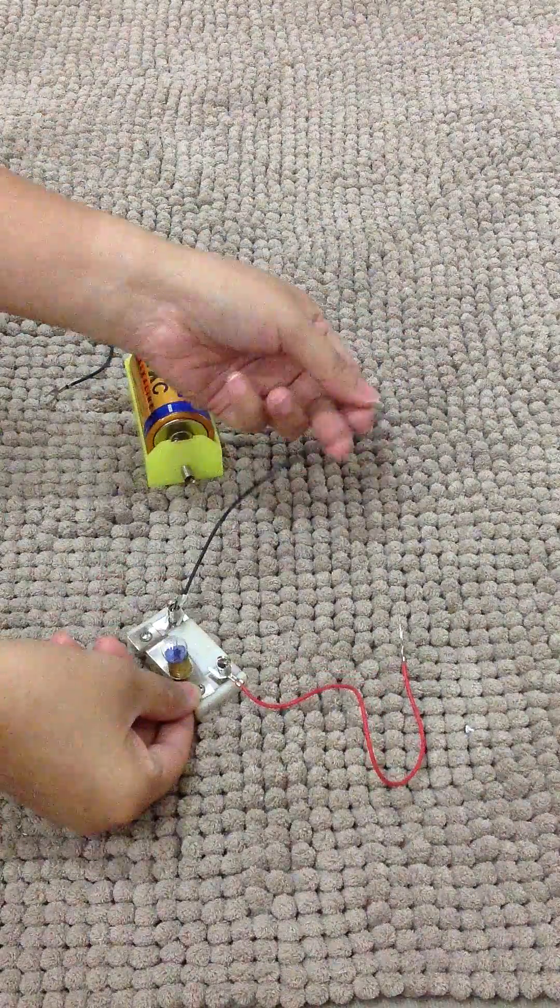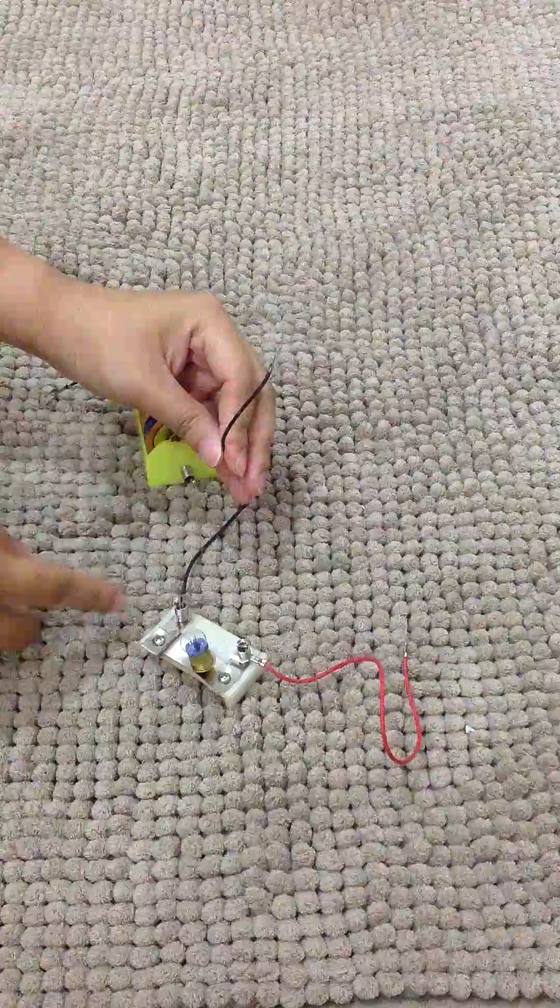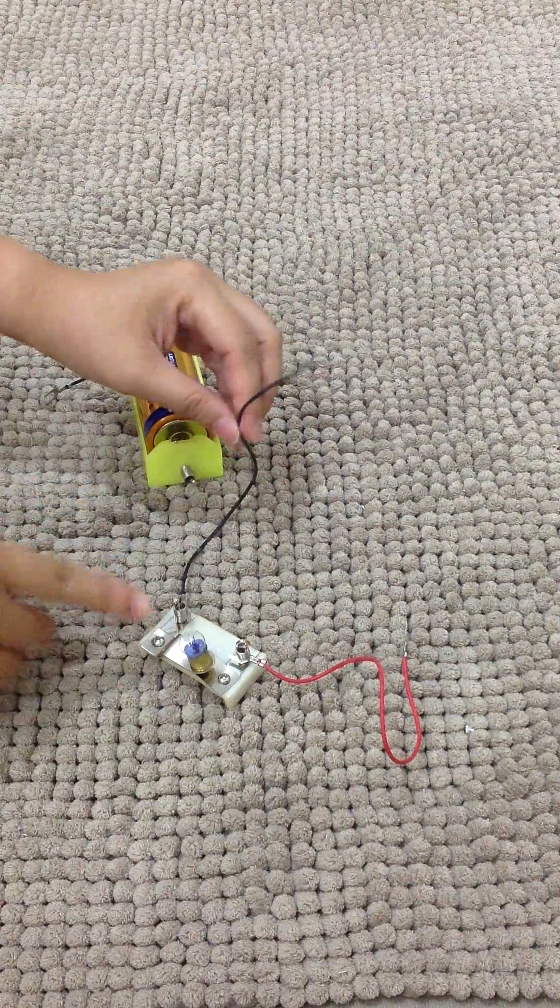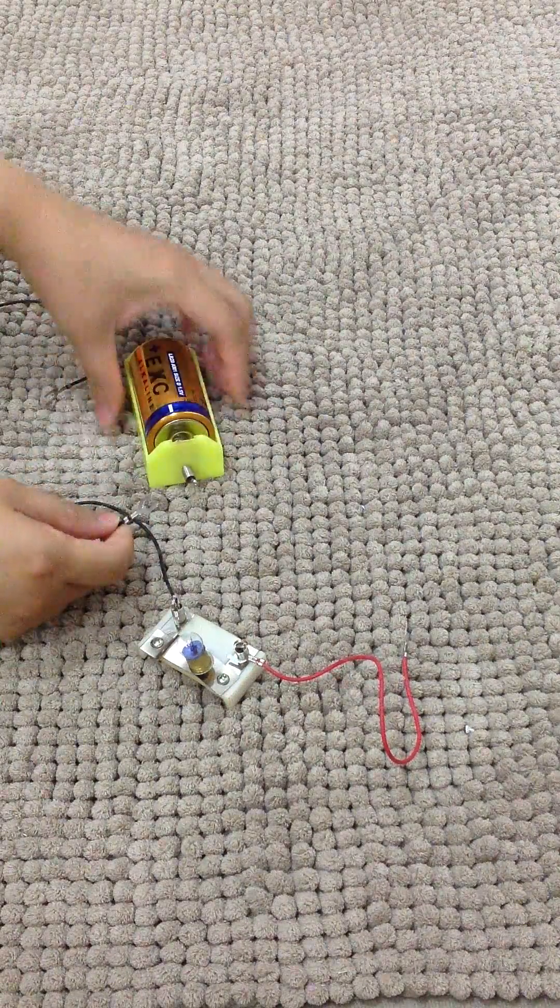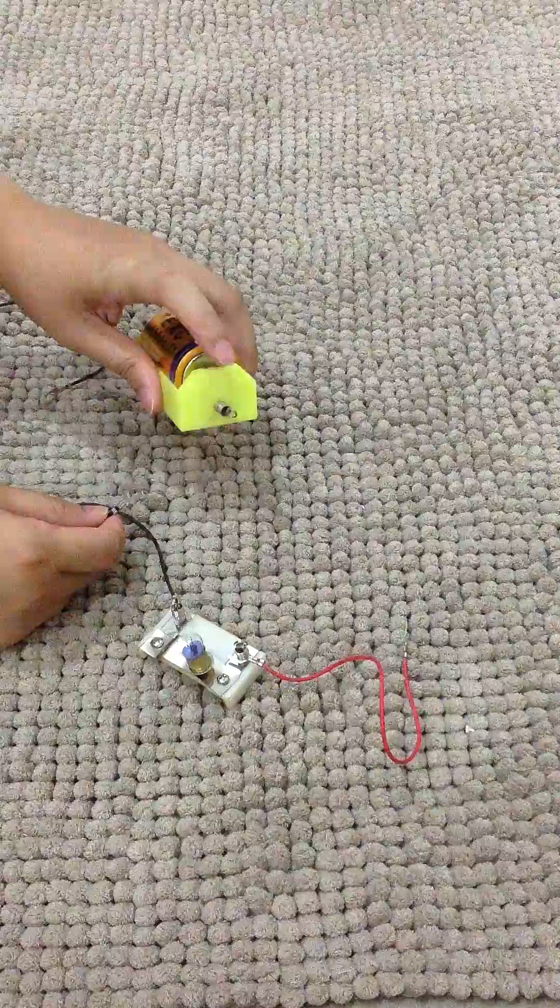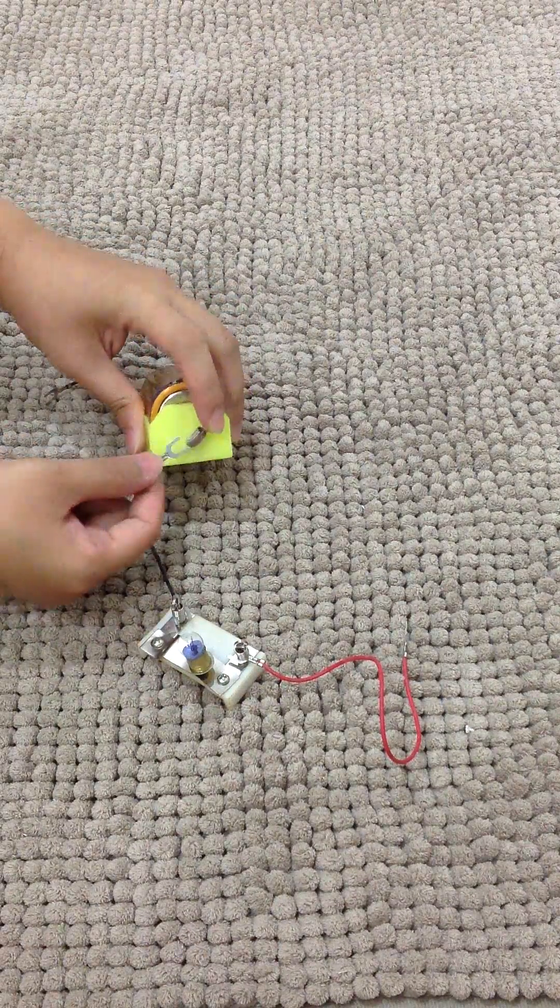Connect one end of the wire which was connected to the light bulb holder to the negative end of the battery.